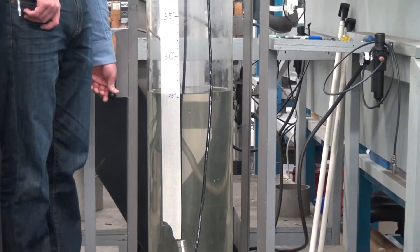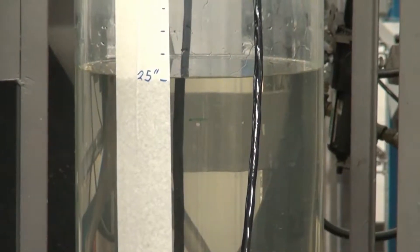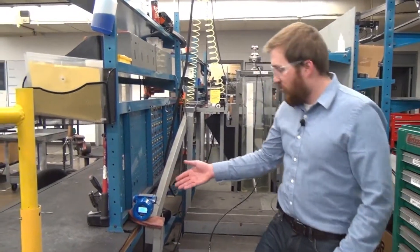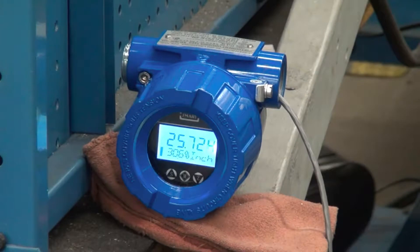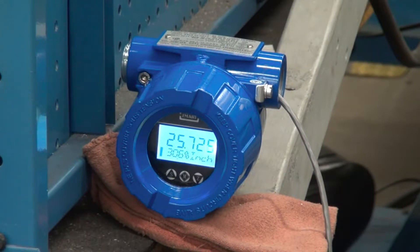Now the level is at 25 inches of water column. If you come back here and check the remote display, you'll see that the display is showing 25 inches of water column.